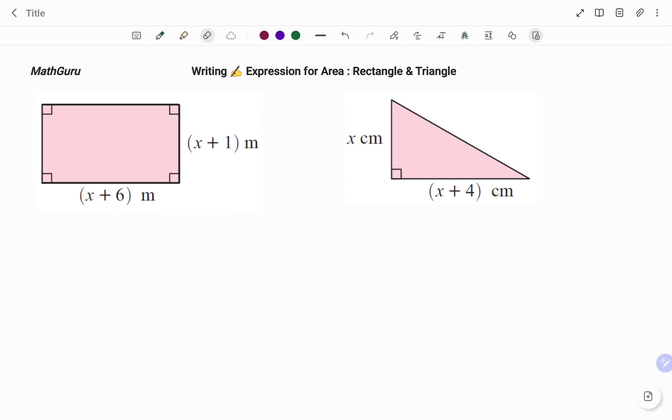To find the area, we have area of a rectangle equals your length times your width. In this case, your length is x plus 6, I have that in the bracket, multiplying my width x plus 1.